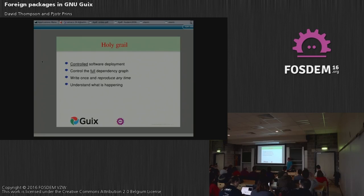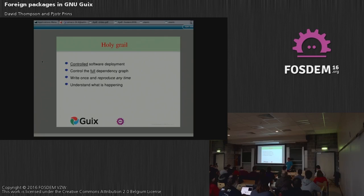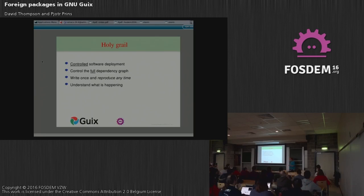So the holy grail is that you write a piece of software once, with all its dependencies, and you can reproduce it at any time — reproduce it on somebody else's machine, exactly the environment that you're using to run this software yourself. How many of you are developing software? So you know about this problem.